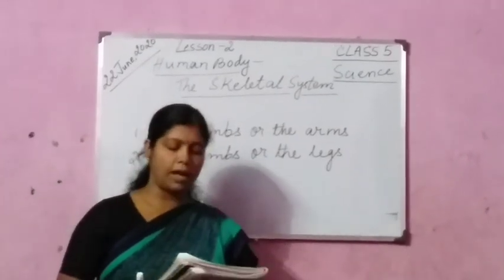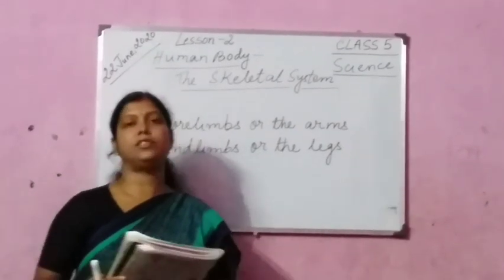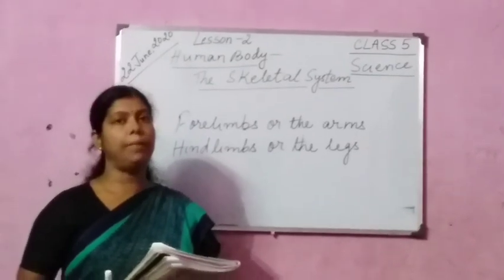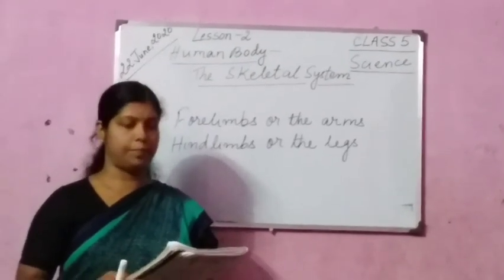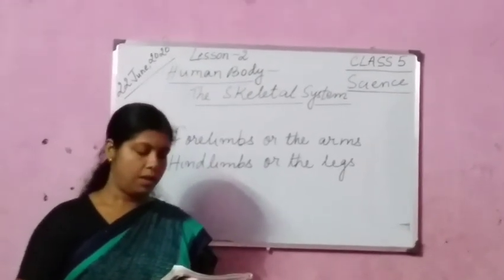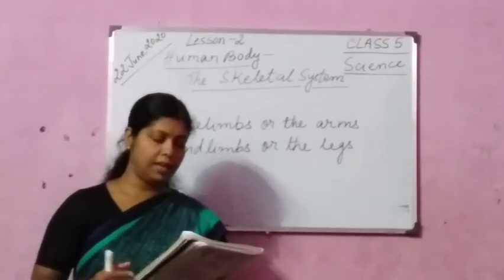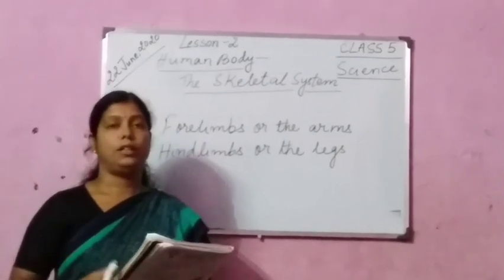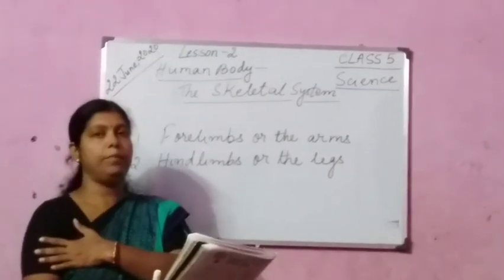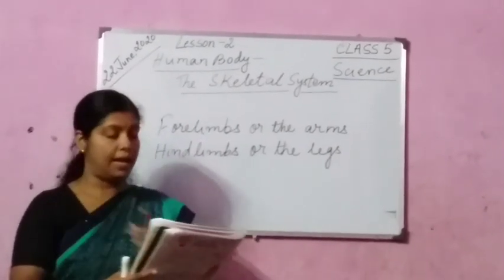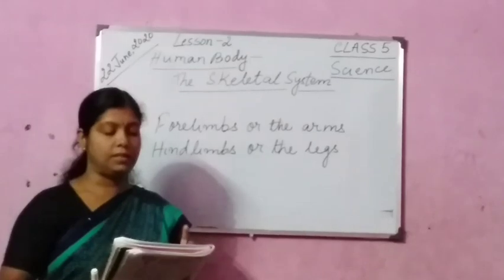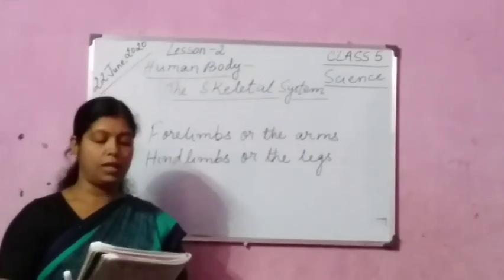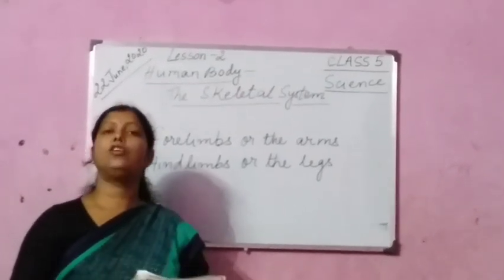Forelimbs or the arms are divided into two parts: the upper arm and the lower arm. The upper arm has a single long bone called humerus.